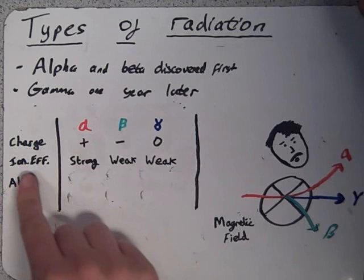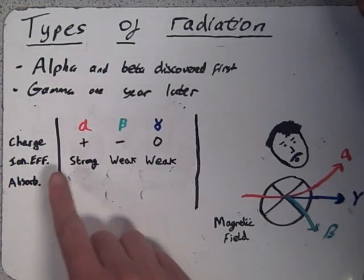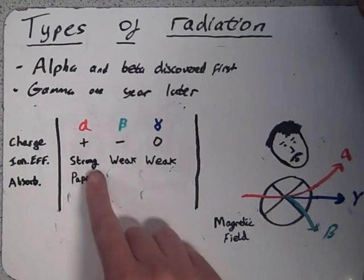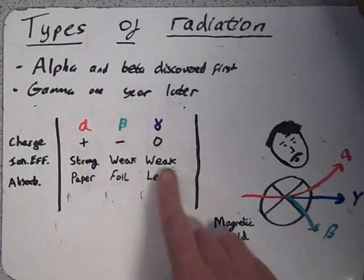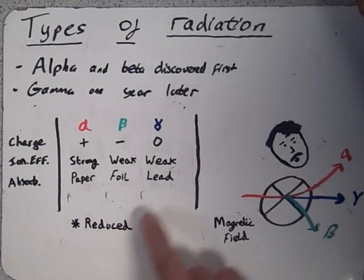Absorption tests were also performed using a Geiger-Muller tube and a set of materials to determine the penetration power of each type of radiation. It was found that alpha radiation is absorbed by paper and thin metal foil, beta radiation is absorbed by about 5 mm of metal, and gamma radiation is absorbed by several centimetres of lead.